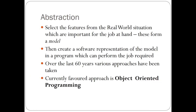The way that we perform abstraction is that we take the main features of a real-world situation and apply tools and techniques in order to convert that real-world situation into a working computer program. Some of those tools and techniques lend themselves to more functional-based programming languages — you might have used pseudocode or Nassi-Shneiderman charts. There are lots of different approaches that have been used in the past. In this particular unit we're going to look at a very different methodology, which is object-oriented programming.